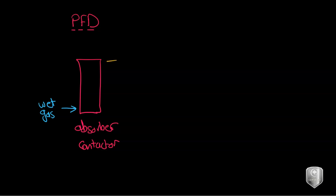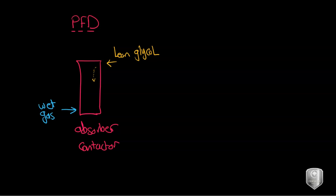From the top we have lean glycol — lean means clean or without any water vapor. The lean glycol moves down and the wet gas moves up, and here you have a contact where the absorption or dehydration process happens. After that the wet gas becomes dry gas because the glycol takes all or most of the water vapor from it.